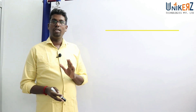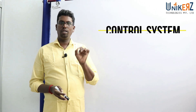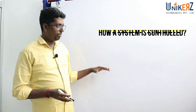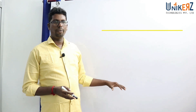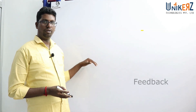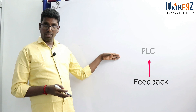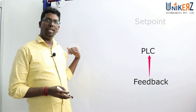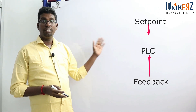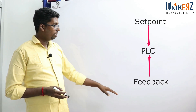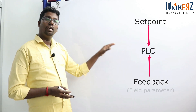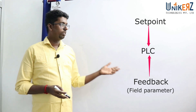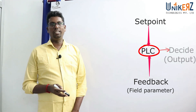How can we discuss control? A system can be controlled using feedback, a controller, and a PLC. The key elements are: requirement (setpoint), field, actual, and parameters — and based on those, decisions are made.